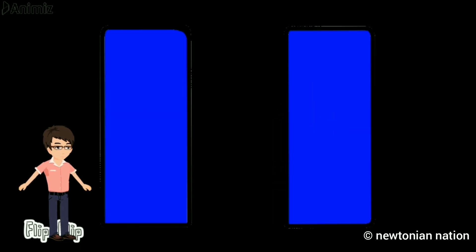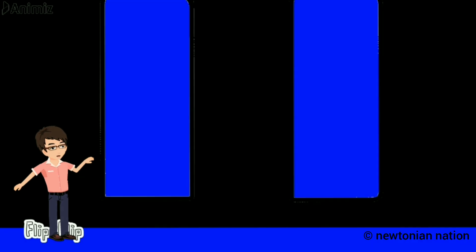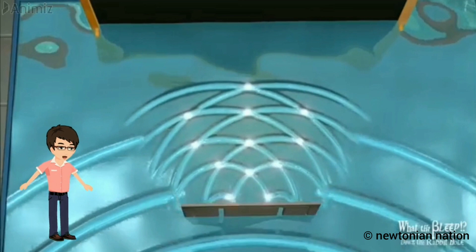Then, instead of the ball, let us shoot some electrons one by one through the slit. Here, the electron is different. It is similar to a wave.